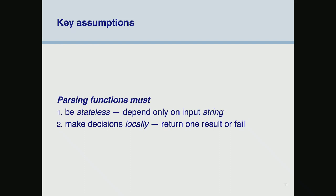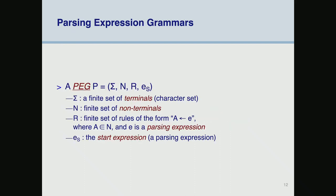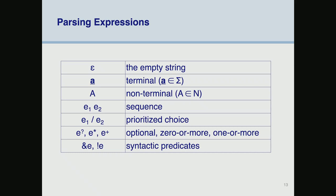The assumptions are that we're stateless — we only depend on the input string and make all decisions locally. Looking at the definition, it looks pretty much like BNF with small differences. We have an empty string, a terminal to match a string like 'foo' or 'def' or 'class', non-terminals like in BNF, a sequence, and prioritized choice. For example, having 'foo' before 'foo bar' will never work — if 'foo bar' is input, 'foo' will match and 'bar' will never match — so you better put 'foo bar' first.